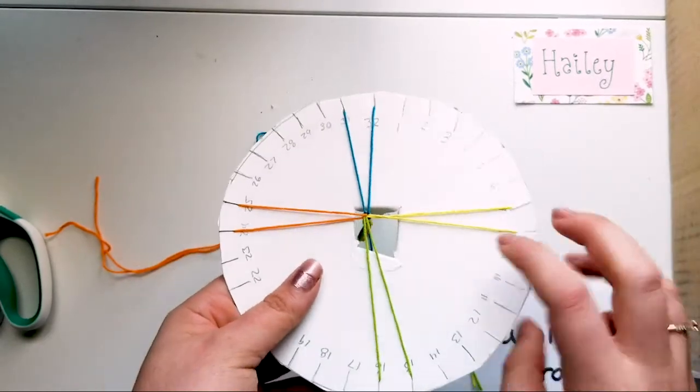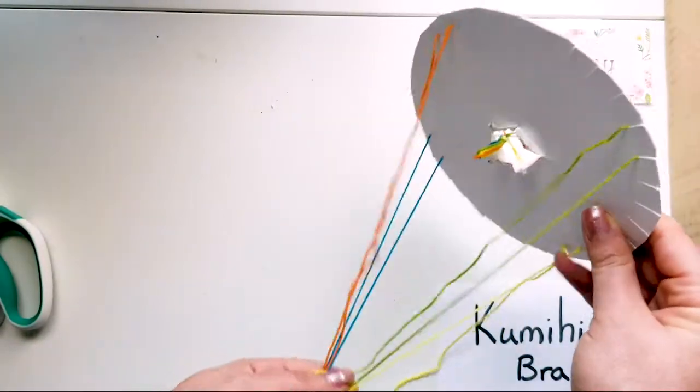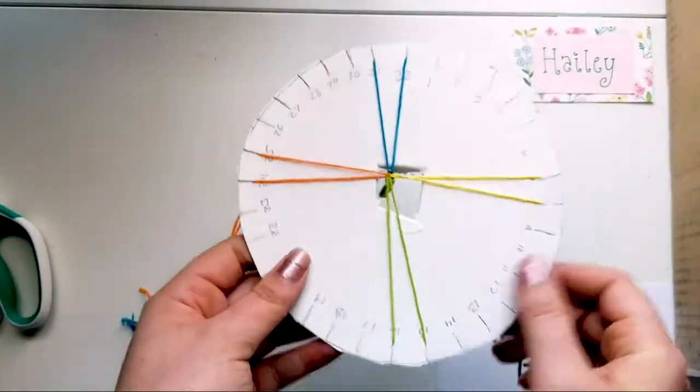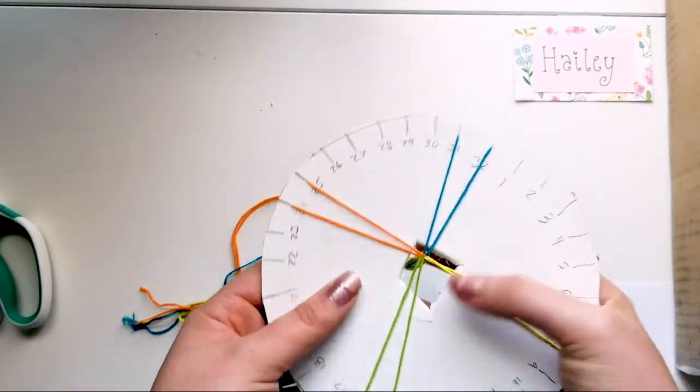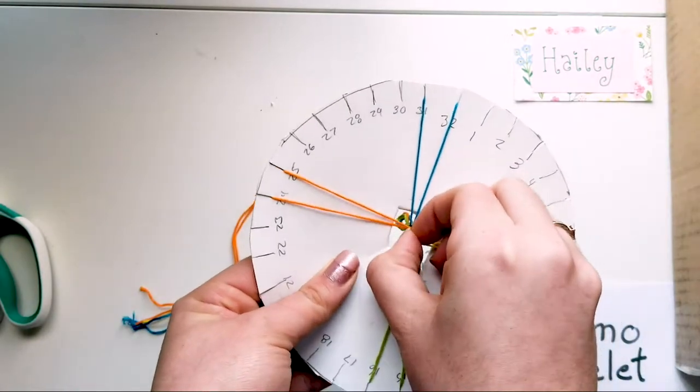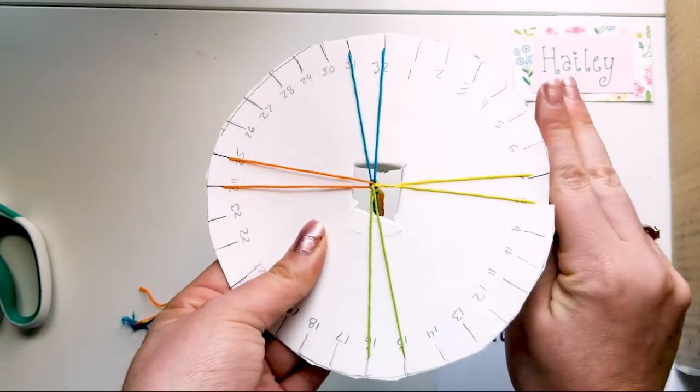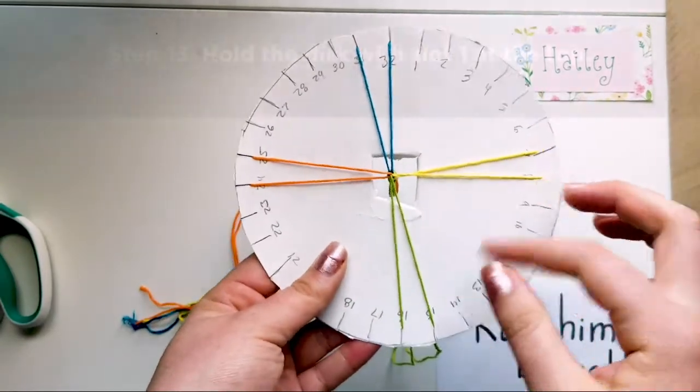So the other thing to keep in mind with this bracelet is that the bottoms tend to get tangled. So every once in a while, just kind of run your fingers through the strings to make sure that they're nice and straight and not tangled. So mine's a little off-center. That's okay. You can kind of adjust it a little bit if you want it to be more on-center, but it really doesn't matter, and you can kind of adjust it as you go.